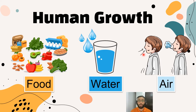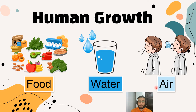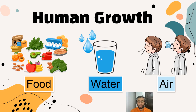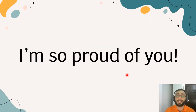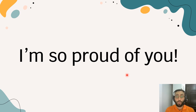So again, human growth: what does a human need to grow? Number one: food — healthy food. Number two: water — we need lots of water to get energy. Number three: air — because air has oxygen. When you have food, water, and air, your body will have more energy and you will grow. That was it for today's class. Today we talked about growth, how humans grow, and what humans need to grow: food, water, and air.